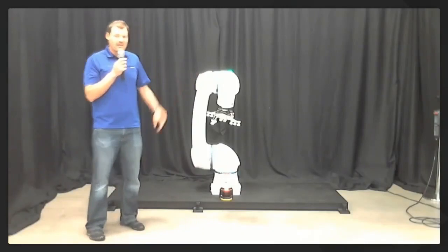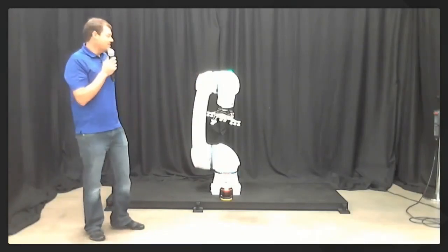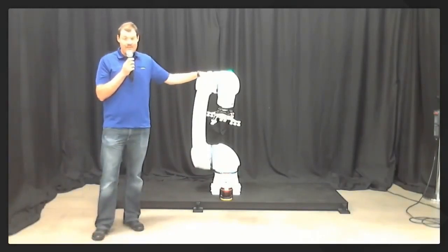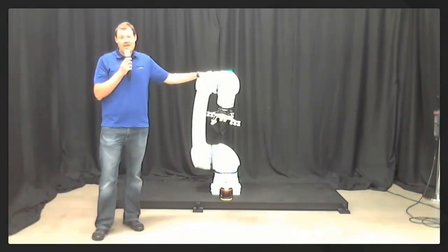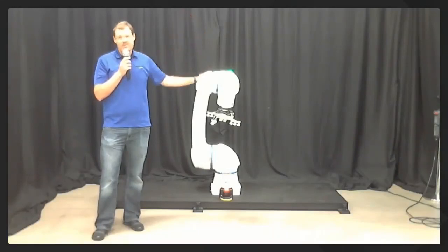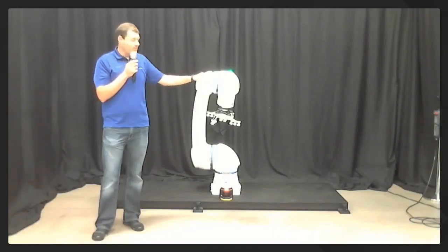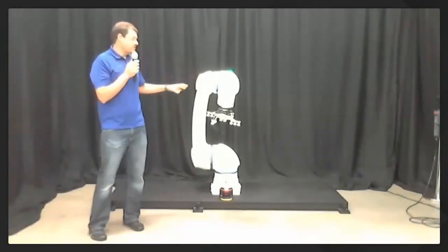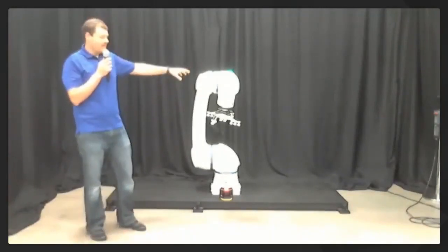So we're very excited about this robot. This is the first IP67 rated cobot that we know of. It has 1.7 meters of reach, so out and up. So it enables us to reach two full pallets using one riser. So from one location, we have full reach of two full pallets. Very exciting.